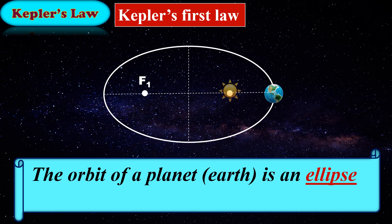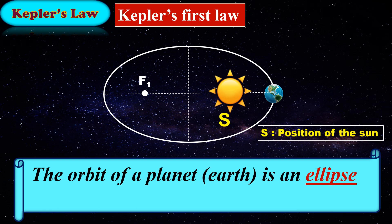So, let's take here f2 as S, that is the position of the sun. Therefore, Kepler's first law states that the orbit of a planet is an ellipse with the sun at one of the foci.